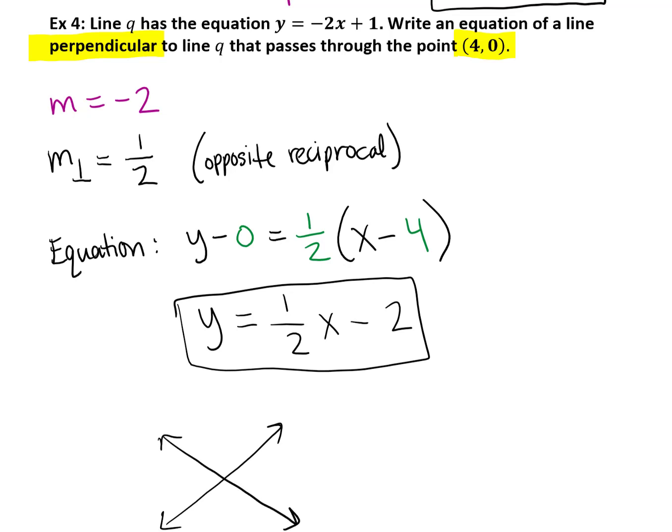So if you were to draw these lines on a coordinate plane, they would, in fact, end up being perpendicular and meeting at 90 degrees at their intersection. So that's it for this lesson. I hope you guys enjoyed. Thanks for watching.